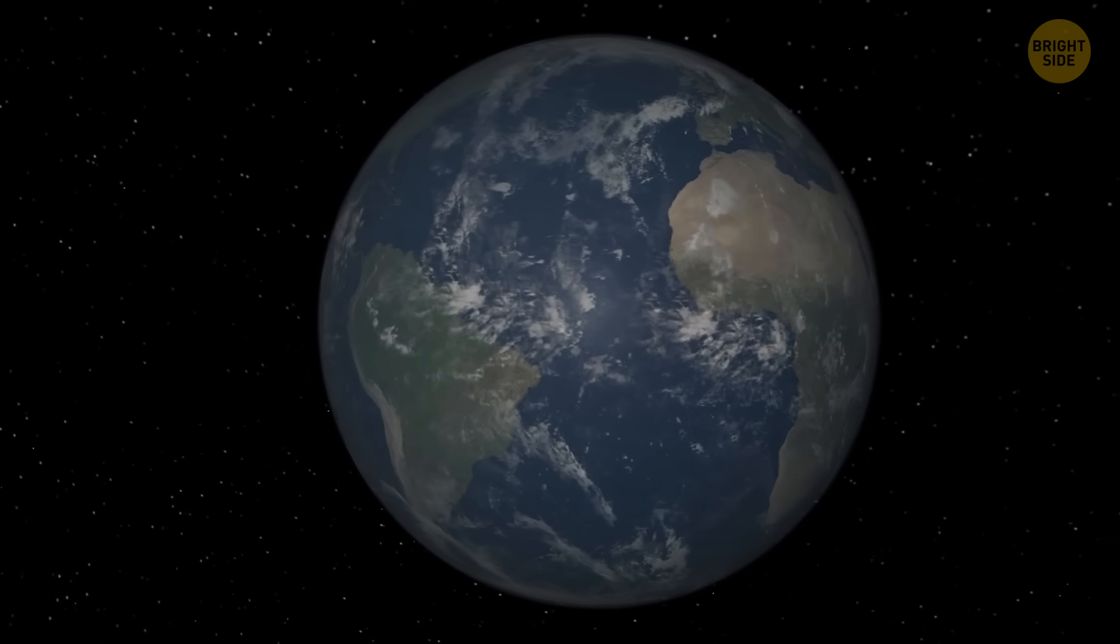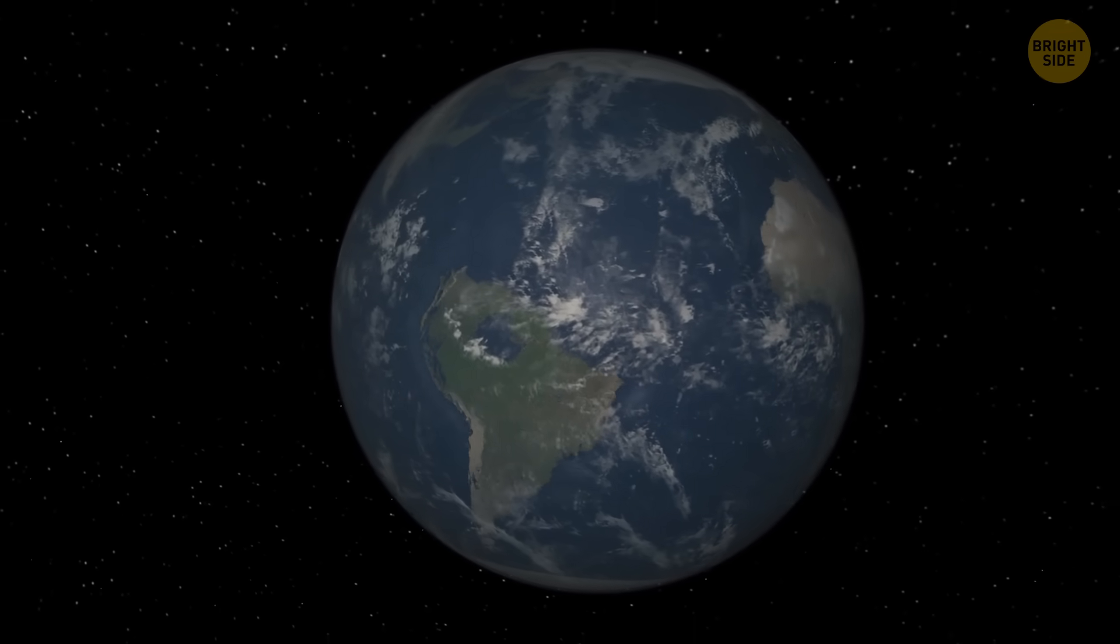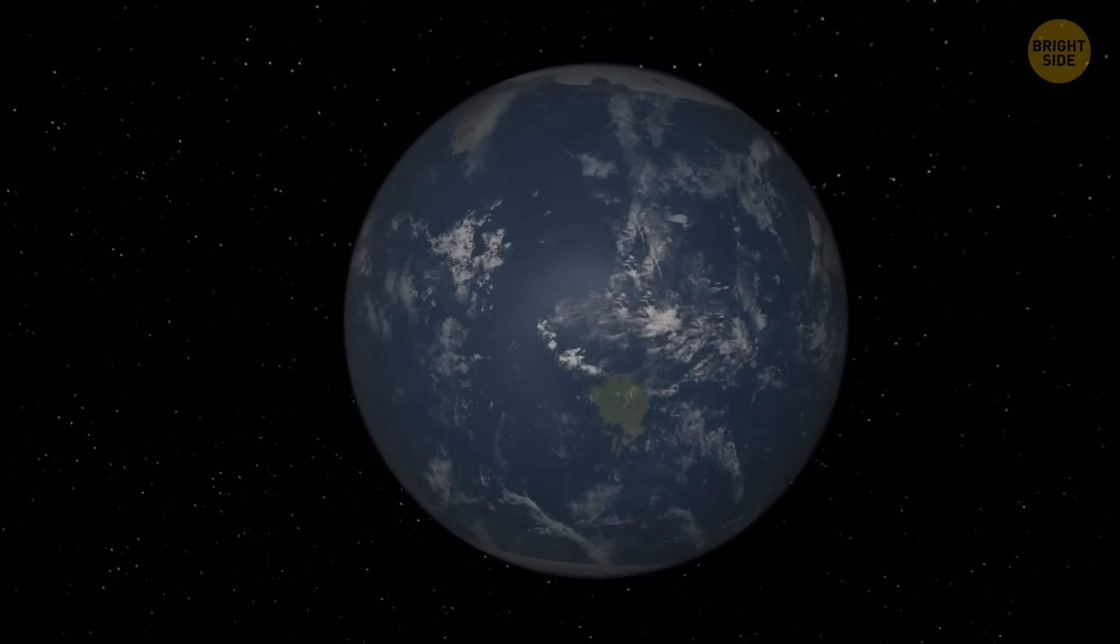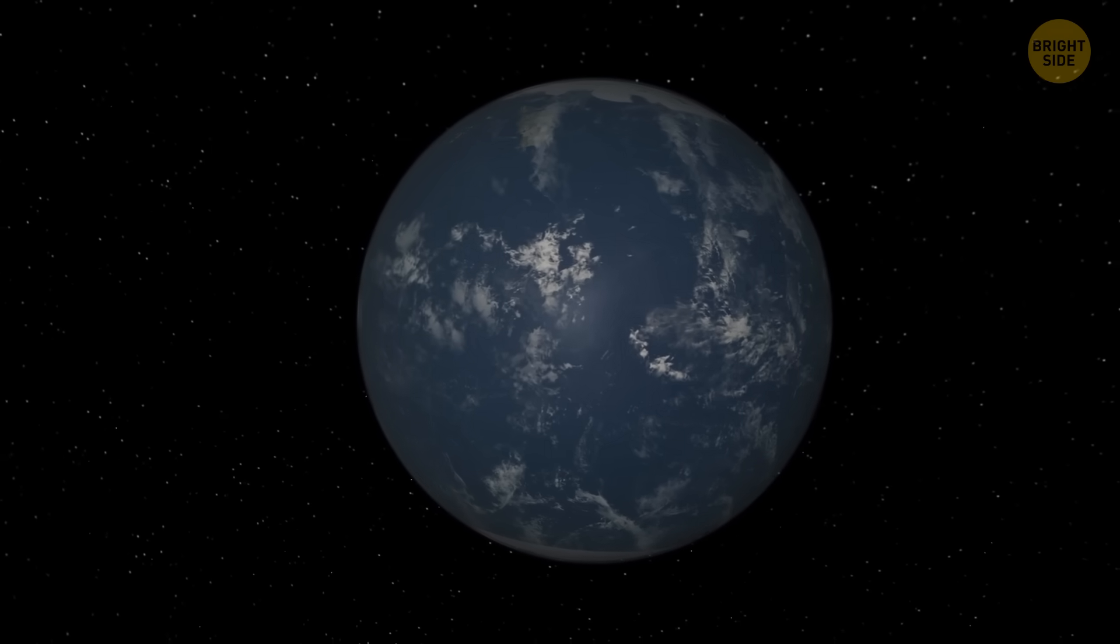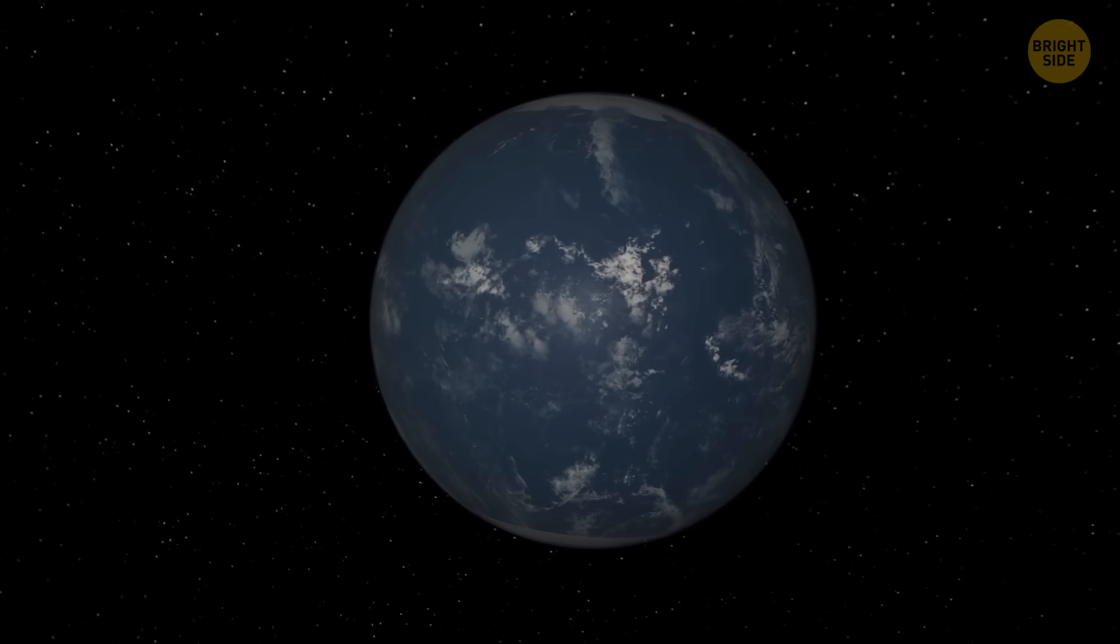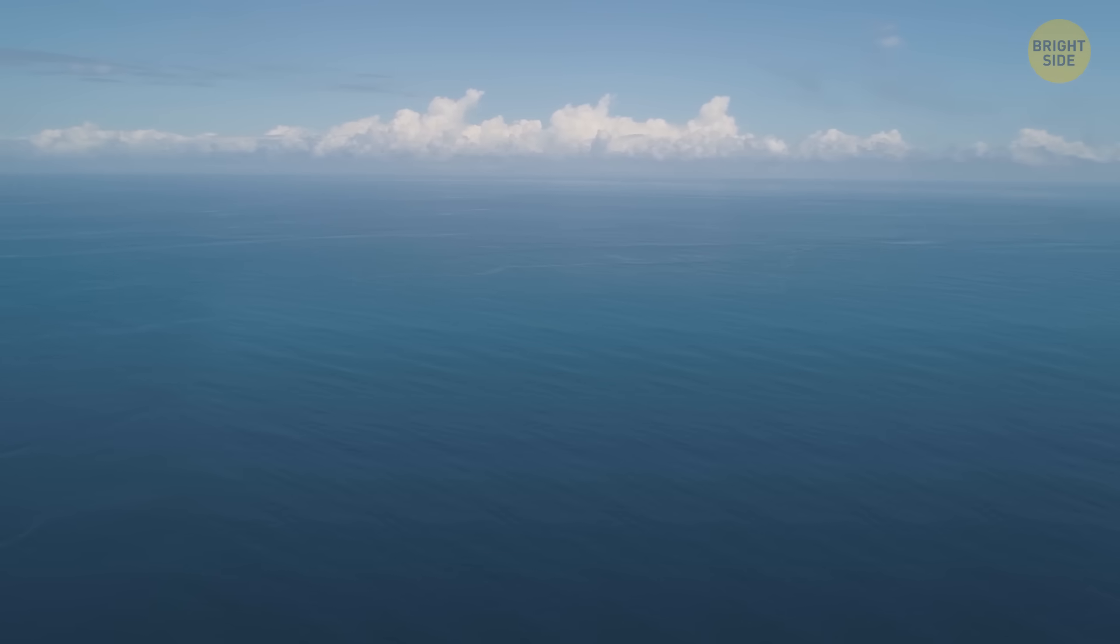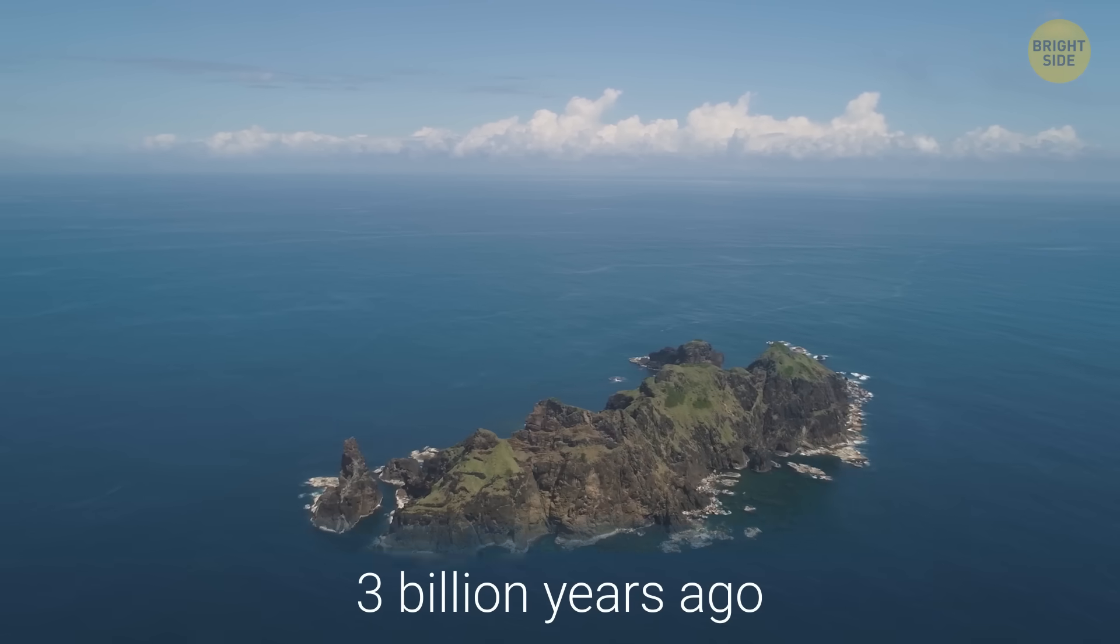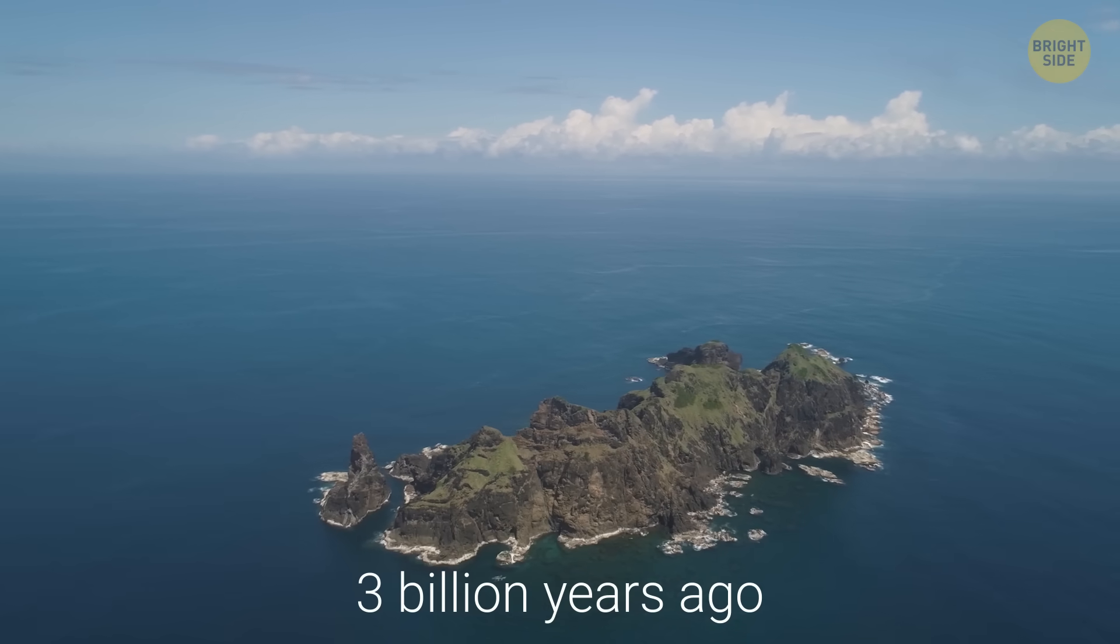How about if our planet was completely covered with water? Well, it turns out that ancient Earth might have been just that, a water world. According to some researchers, our planet was mostly covered with oceans about 3 billion years ago, with only a few scattered islands popping up here and there.